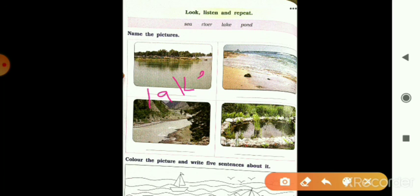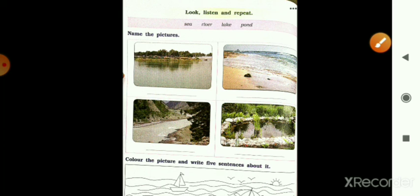Jaise ki first picture hai to wahan pe aapko likhna hai lake, a lake, a lake. Phir hai to usme likhna hai aapko sea, then river and pond. Is tarah uske below jo space diye hue hain wahan pe aapko naam likhna hai.